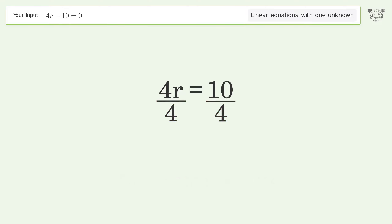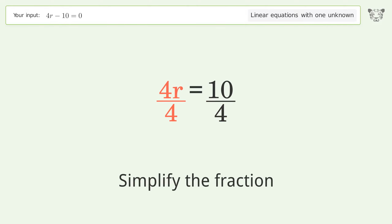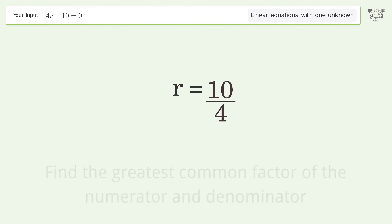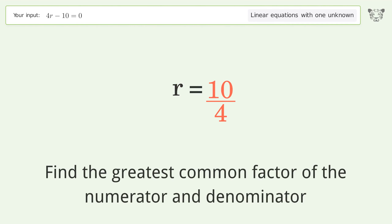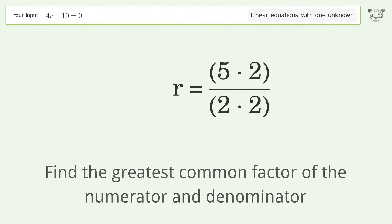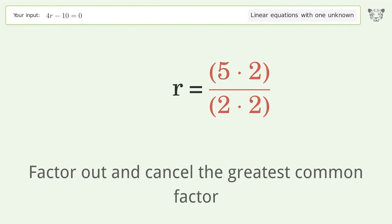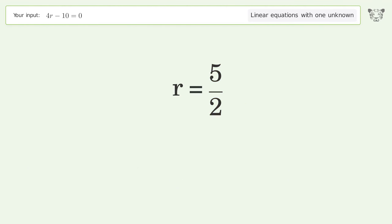Isolate r: divide both sides by four and simplify the fraction. Find the greatest common factor of the numerator and denominator, then factor out and cancel the greatest common factor.